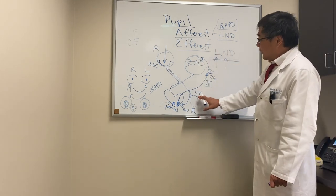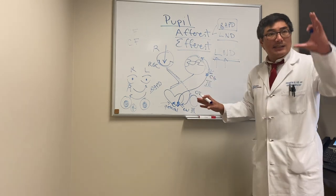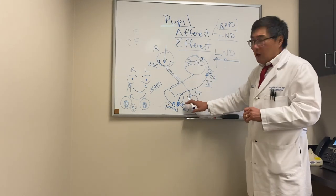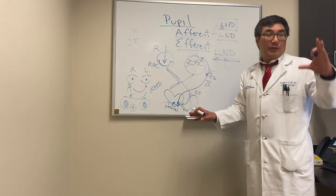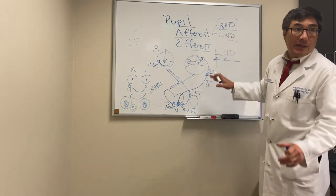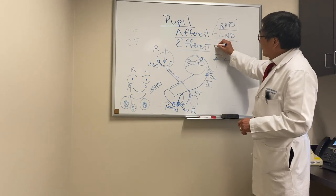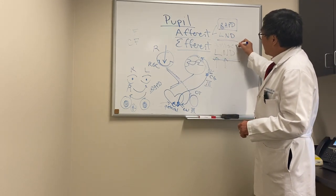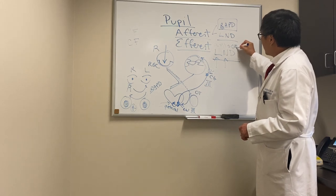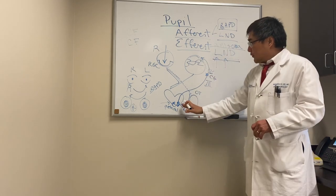The key difference between the Argyll Robertson pupil and the tonic pupil is that the tonic pupil has a tonic near reaction — constriction stays down. The Argyll Robertson pupil does not react to light but does react to near, however it is not tonic.